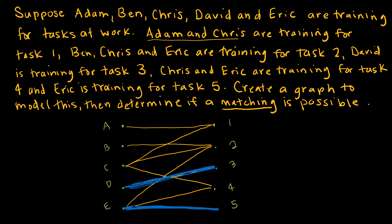So David and Eric are out of it. And now I'm looking at Adam, Ben, and Chris, and what would be the best place for them. Well, for task 4, the only people who knew how to do it was Chris and Eric, and Eric's already taken. So Chris gets task 4.